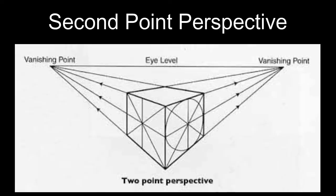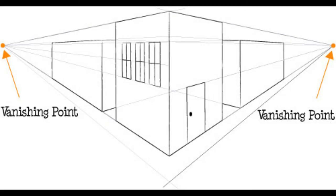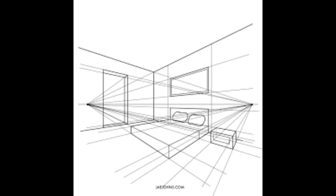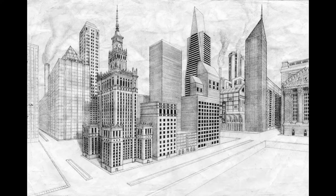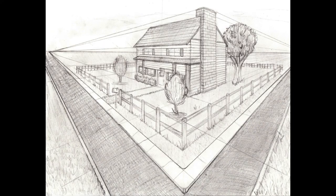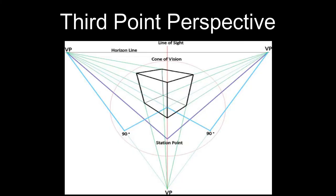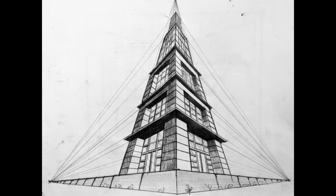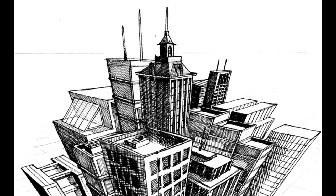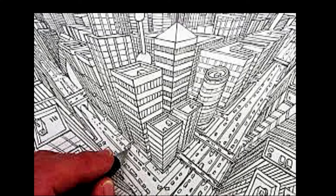Two-point perspective involves two points instead of just one, and is great for showing a front and side view of an environment at the same time. Three-point perspective involves three points and is mostly used to emphasize the size of objects in a drawing, like skyscrapers or buildings.